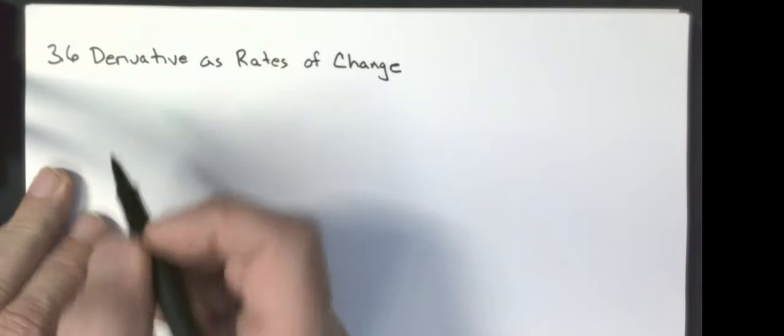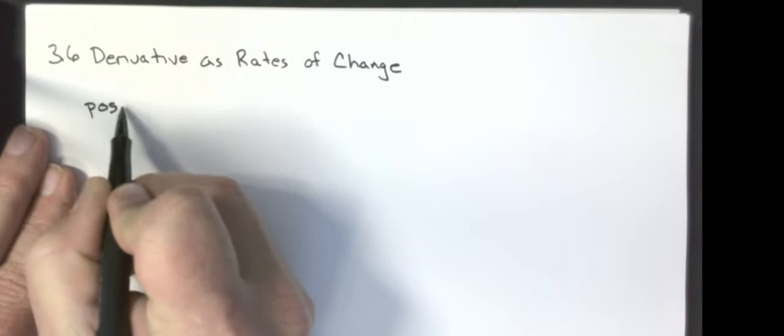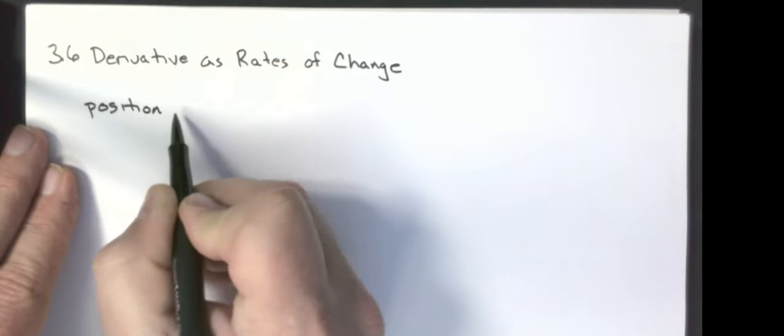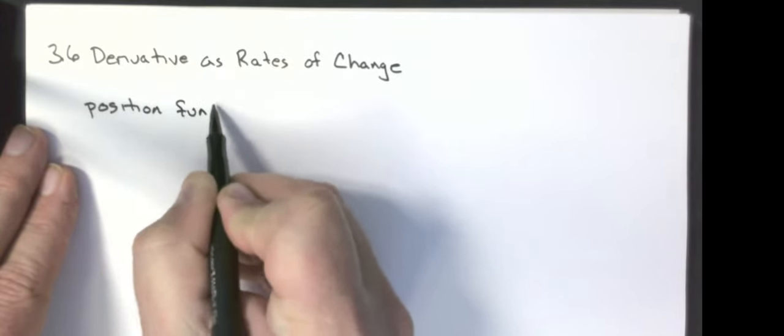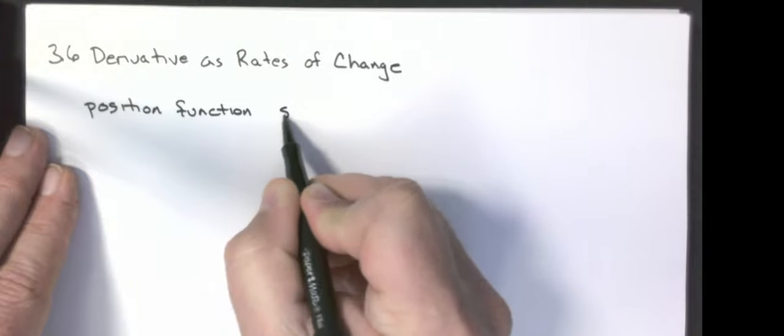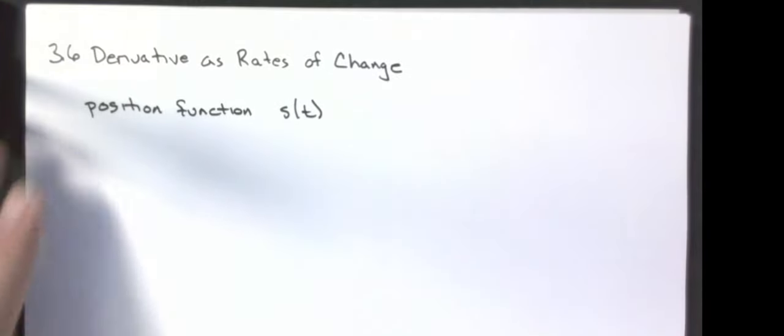We are going to talk about things with rates of change — what that means is how something is changing, in most cases compared to time. So we have some basic relationships. If I have a position, I'm going to call the position function S of T. Position — we normally use the letter S.